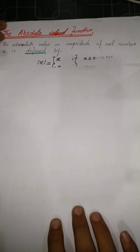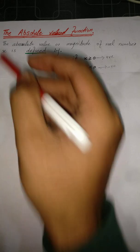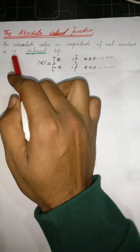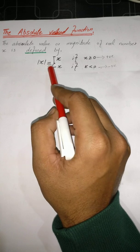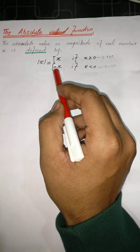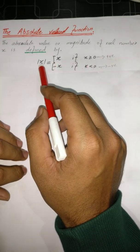Before starting the absolute value, we know that absolute means maximum value function — we also say magnitude value of the function. The definition of absolute value function: the absolute value or magnitude of a real number X is defined as |X| = X if X is greater than or equal to 0, or |X| = -X if X is less than 0.